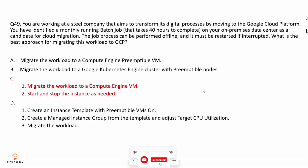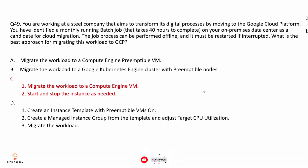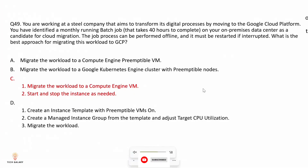Option A: migrate the workload to a Compute Engine preemptible VM — not correct because preemptible VMs are not suitable for long-running tasks as they can be terminated anytime. Option B: migrate the workload to a Google Kubernetes Engine cluster with preemptible nodes — also not correct for the same reason; preemptible VMs can be terminated anytime and are not suitable for a 40-hour long-running task.